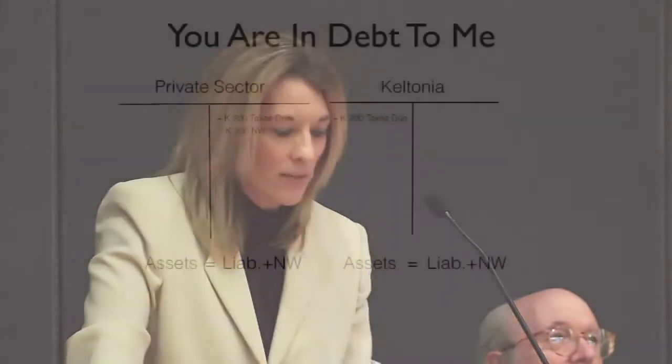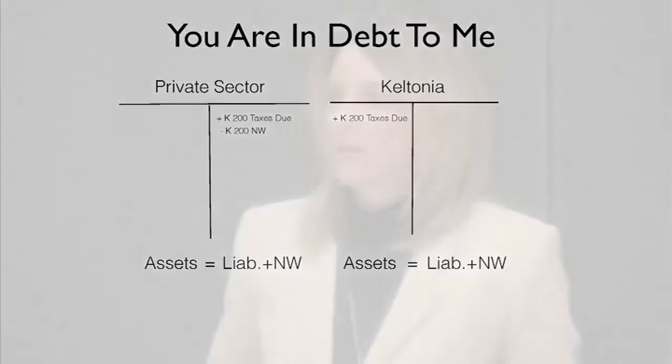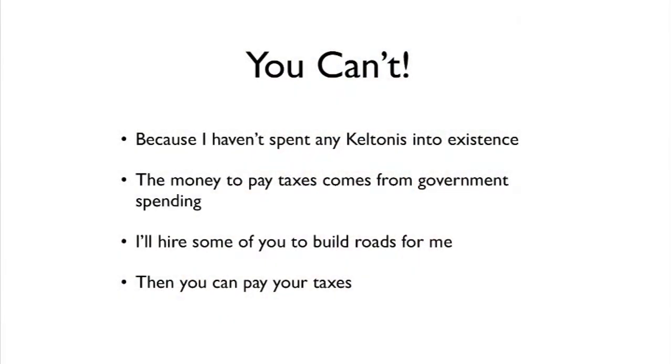What does that mean? If we record this on balance sheets, now you're in debt to me. I have an accounts receivable — taxes due. You have a debt, and I've reduced your net worth. Now let's settle the obligation — go ahead and pay your taxes. You can't? You can't because I haven't spent any keltones into existence yet. The money to pay taxes comes from government spending.